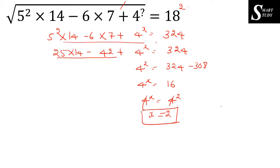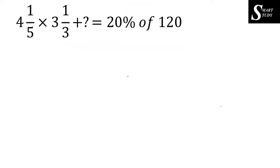You can directly skip intermediate steps and come straight to the final step. It is quite an easy question and you can do it in just 20 to 25 seconds.